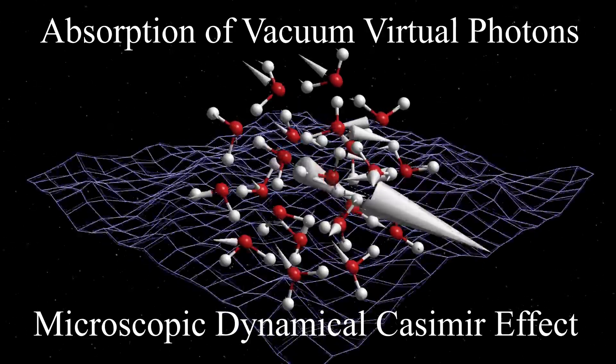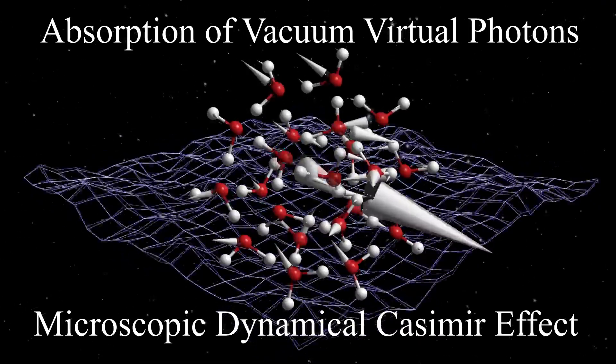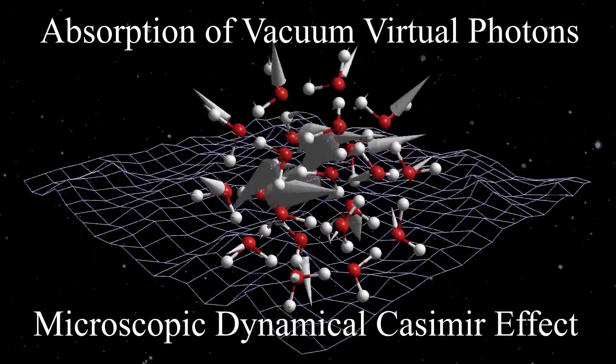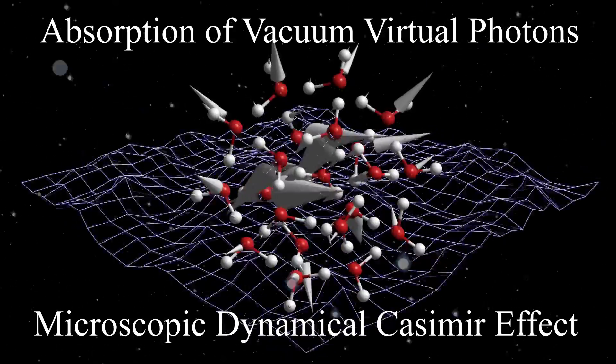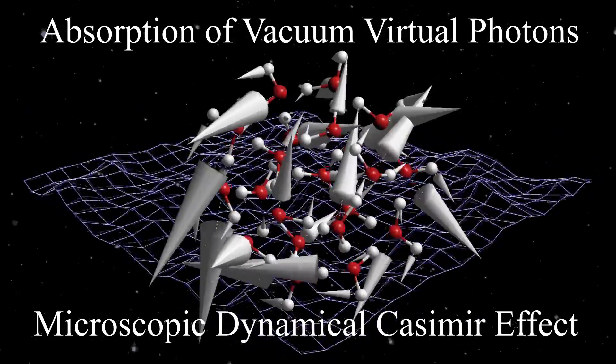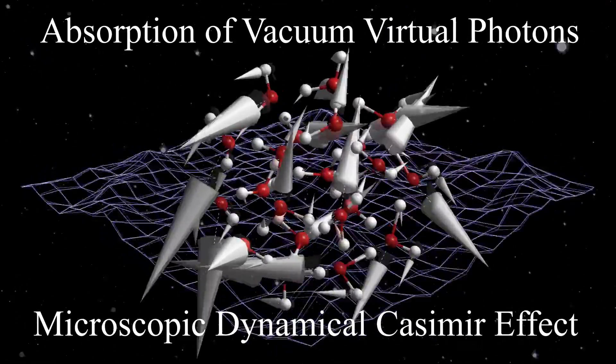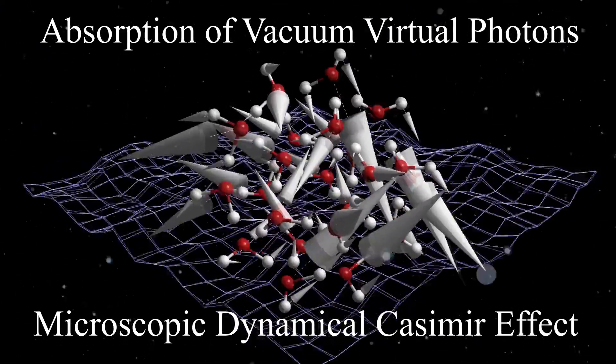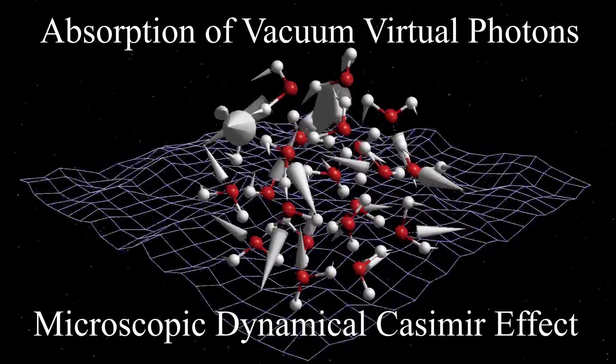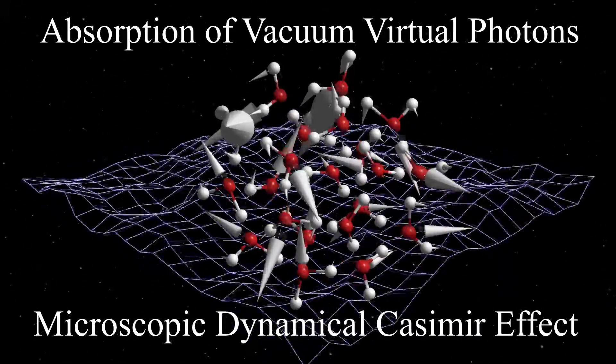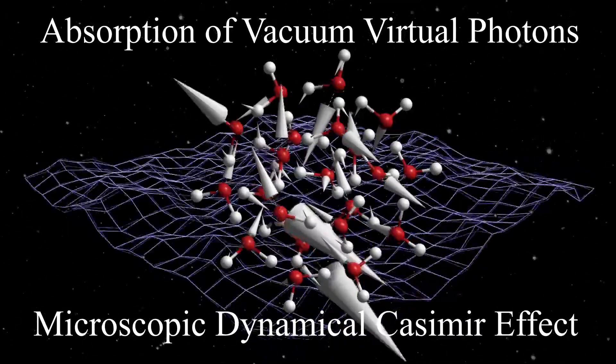To summarize visually, cosmic water nanoclusters can absorb vibrationally, by the microscopic dynamical Casimir effect, the unwanted high-frequency virtual photons of zero-point energy vacuum fluctuations. Only vacuum fluctuations below the water nanocluster cutoff vibrational frequency are gravitationally active. The net pressure of the system is negative, consistent with dark energy.